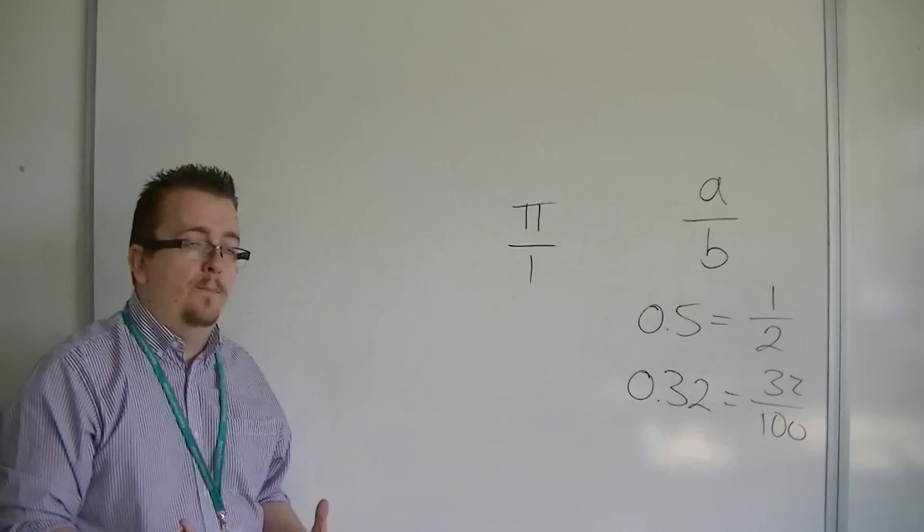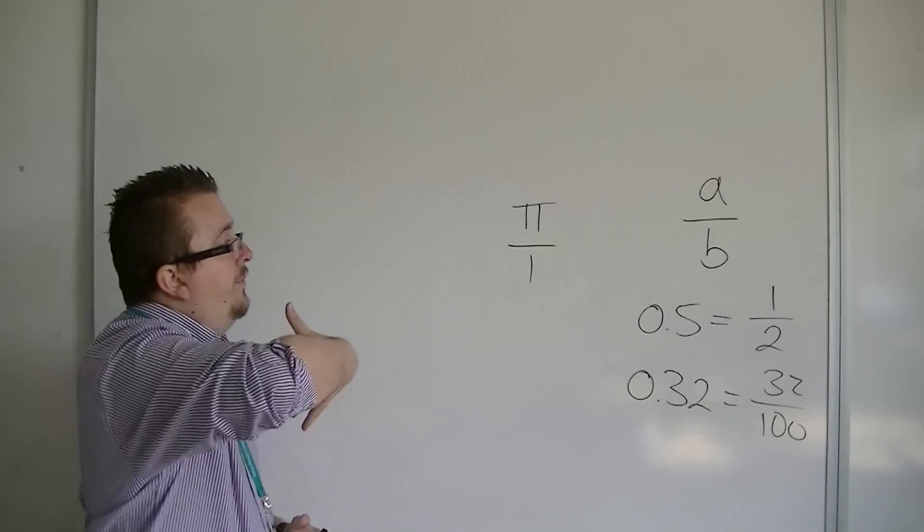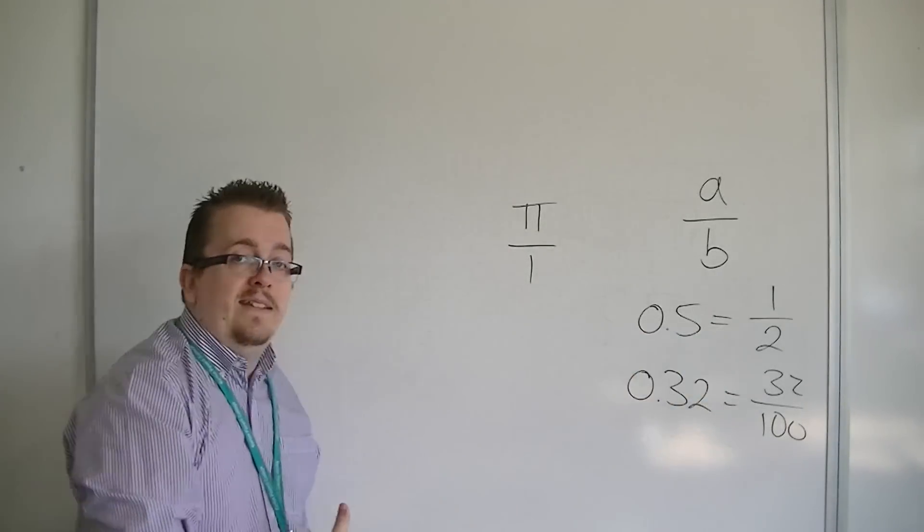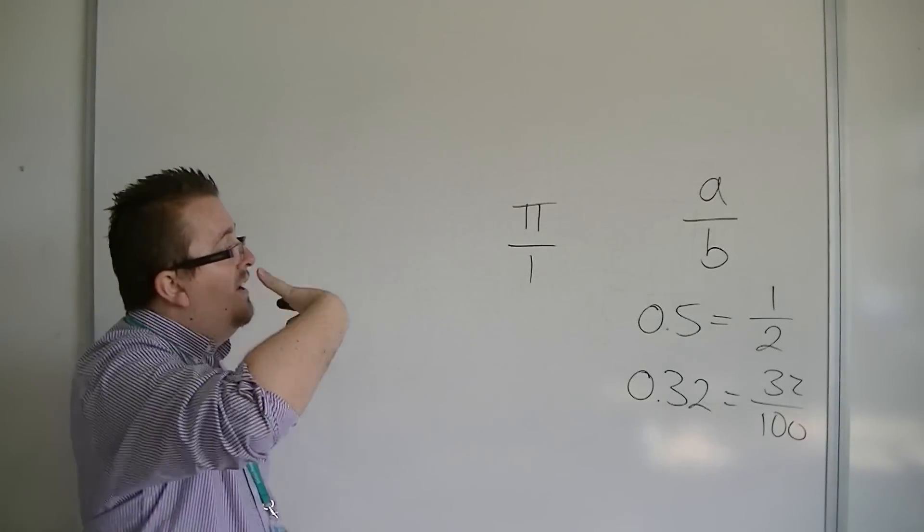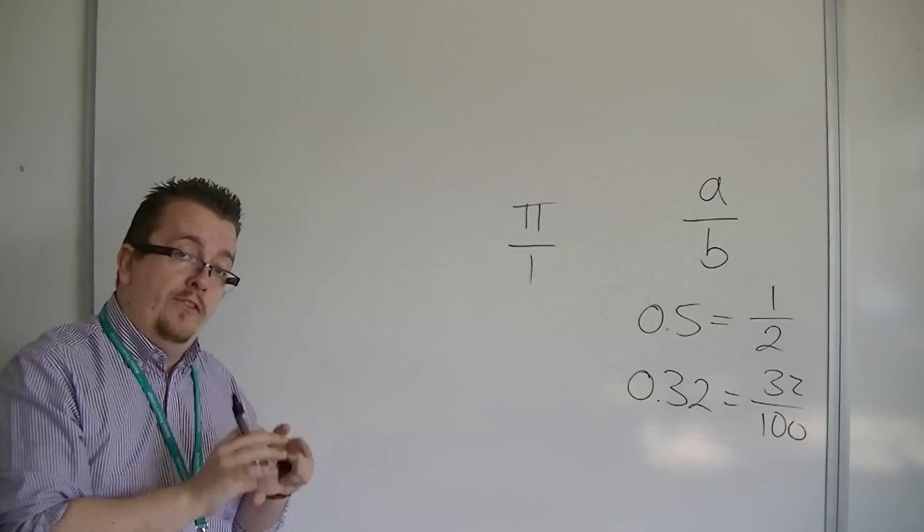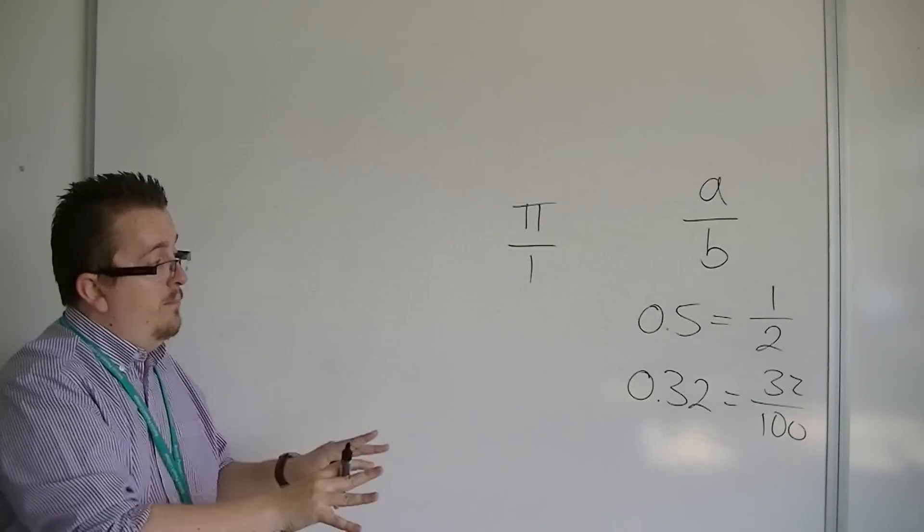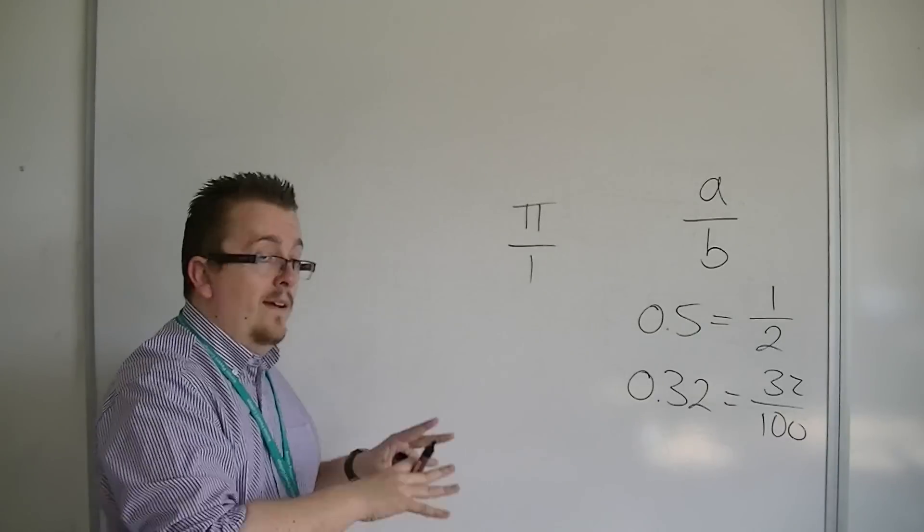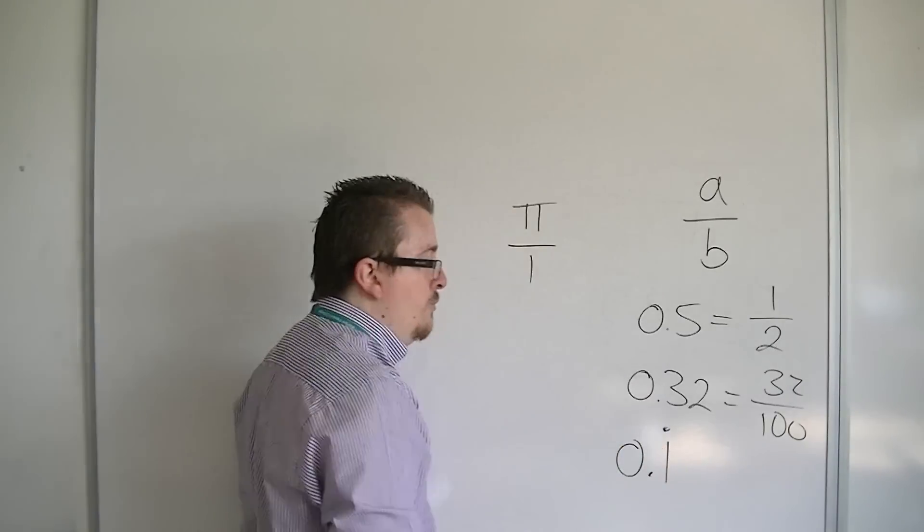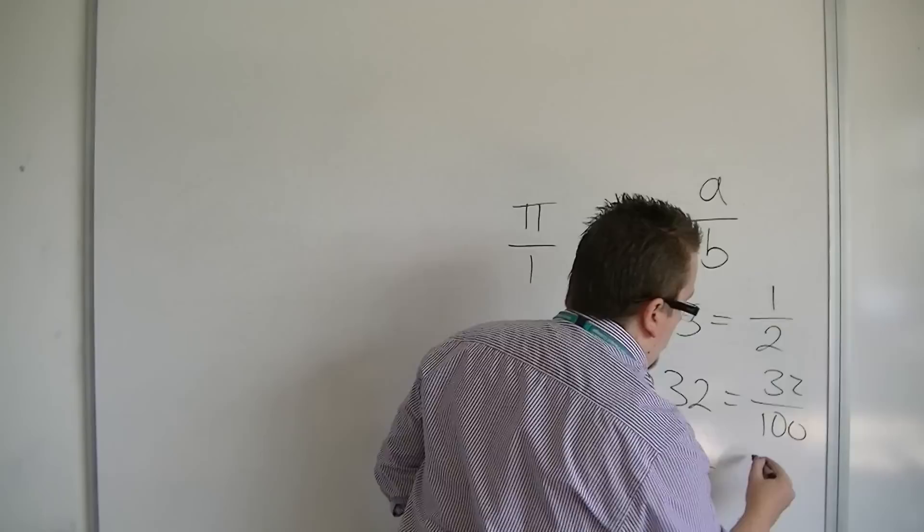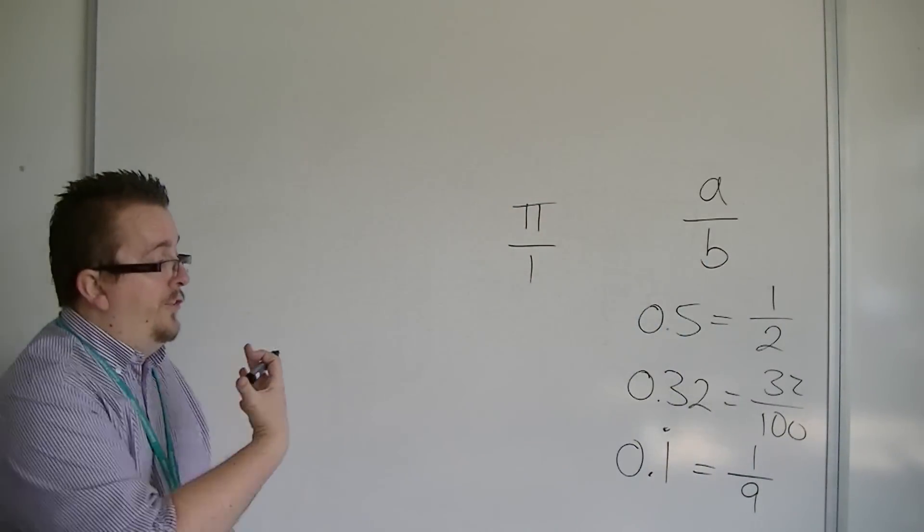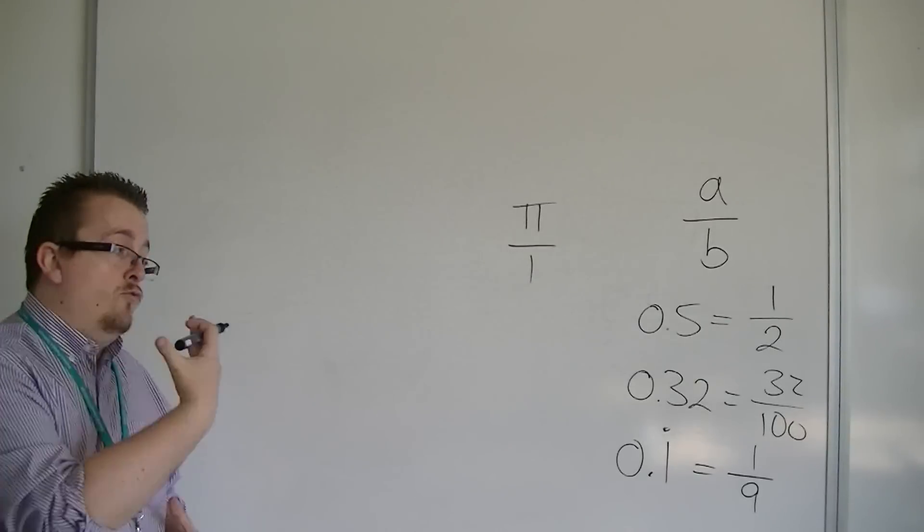So what happens is that a rational number is a terminating decimal, like this, but an irrational number does not terminate. Although some decimals that do not terminate, like 0.1 recurring, for example, can be written as one over nine. So 0.1 recurring, although it's not terminating, is a rational number.